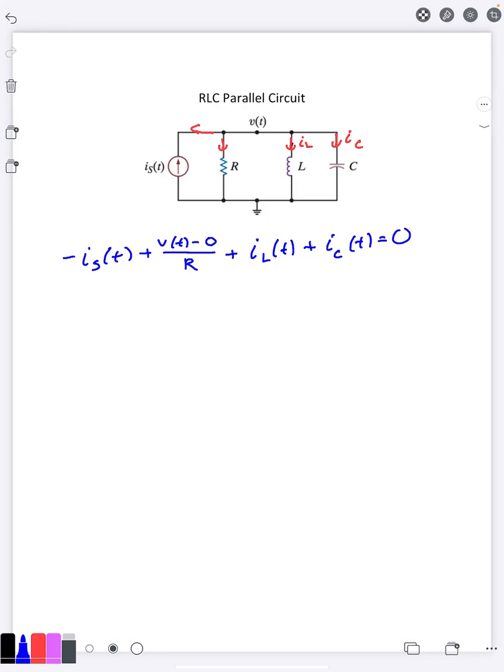Now one thing we know is that for a capacitor, we know that the current through it is going to be the capacitance times the derivative of the voltage across it. Now the voltage across this particular capacitor, vC here, this is going to be the same as the node voltage.